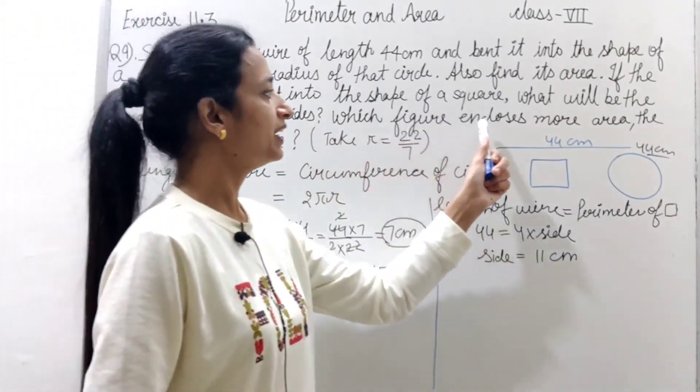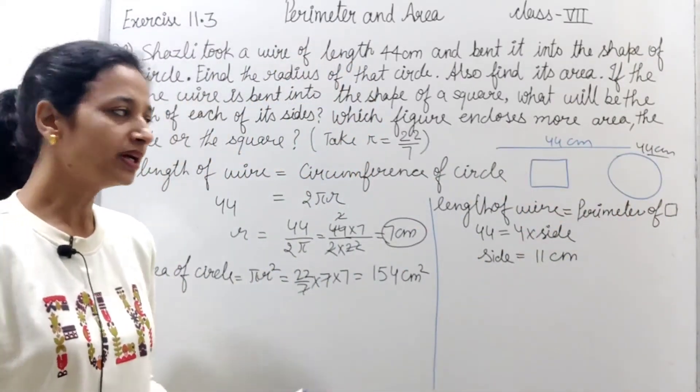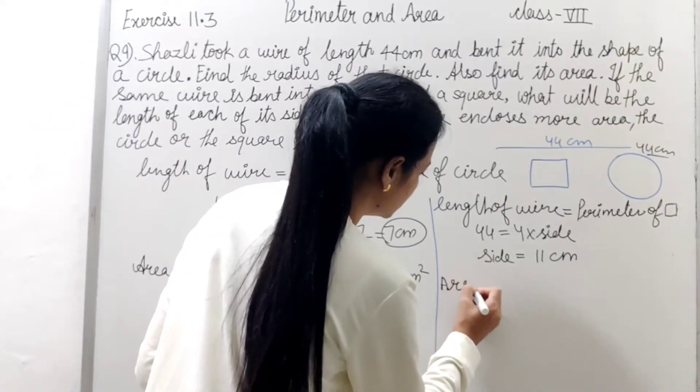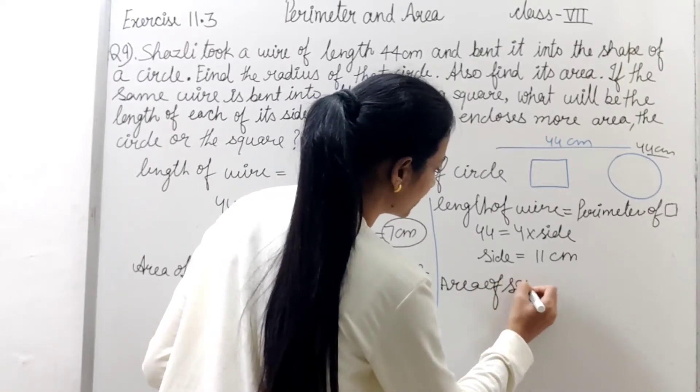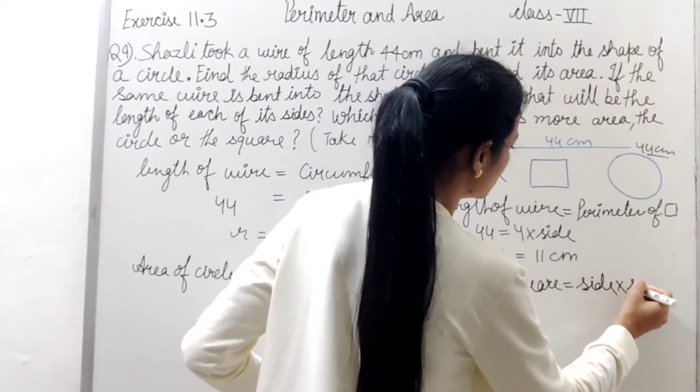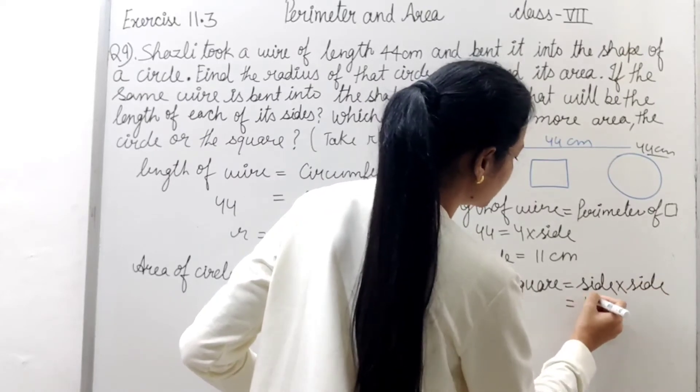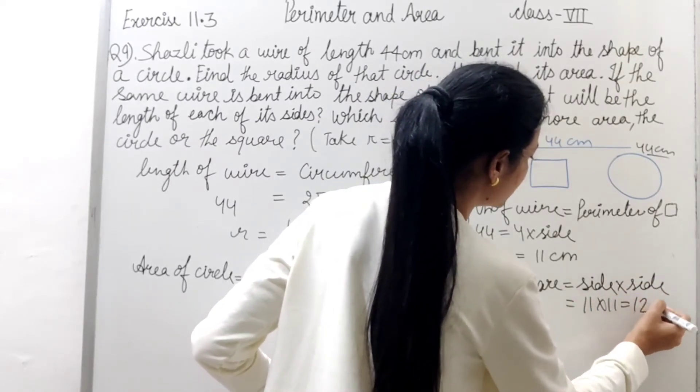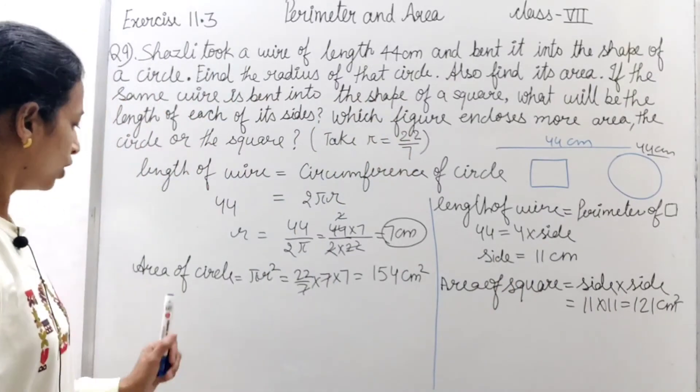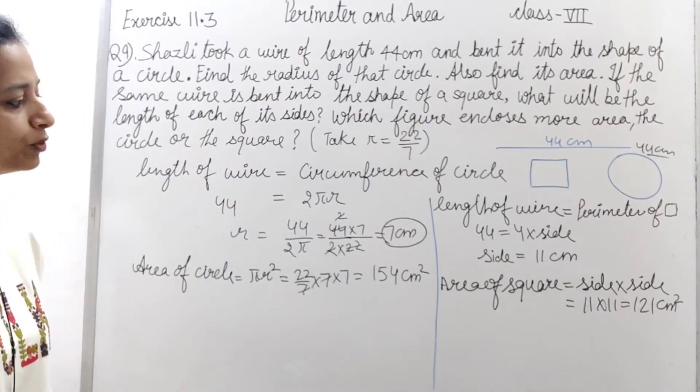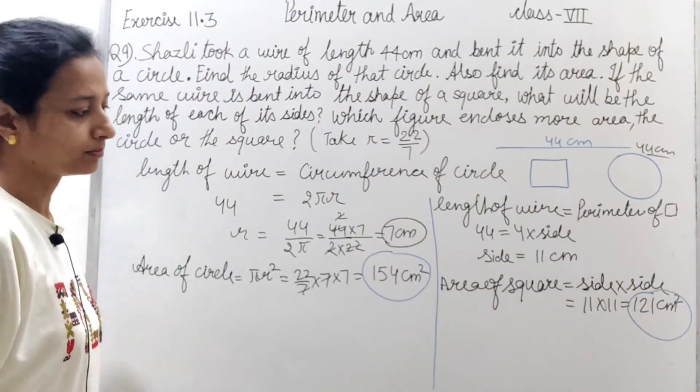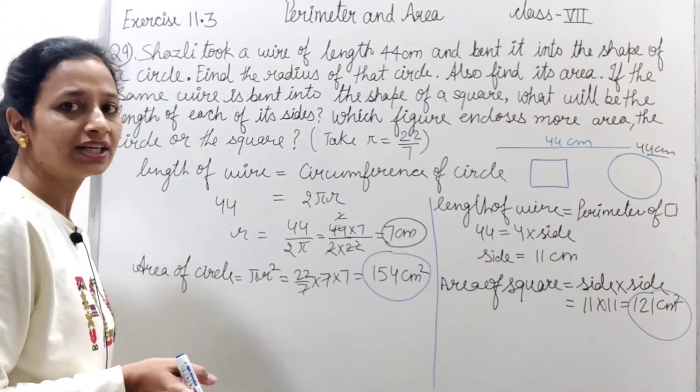Aage chalte hai. Which figure encloses more area? To iska matlab abhi hume square ka area bhi find karna hai. To area kitna ho jayega iska? Area of square equals to side into side and side kitni hai? 11 into 11 equals to 121 square centimeter. To dekhiye square ka area yah hai aur circle ka area 154 centimeter square hai. Ek ka yah hai aur dusre ka yah hai. To kiska jada hai? Definitely circle ka hi jada hai.